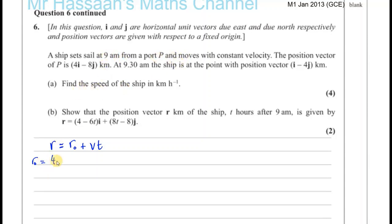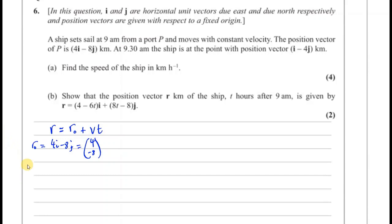We could write this as 4 and minus 8 if you want. Some people would prefer to use vectors in that form. And we know that its position r after half an hour at 9.30, which is when T is 0.5, is going to be, they told us, it's i-4j. So it's i-4j, which can be written as 1 and minus 4 if you wish. So we can see here that we want to find the velocity, where the time is half an hour, which is 0.5.